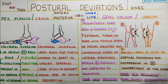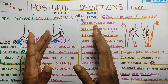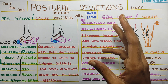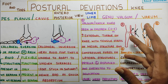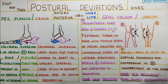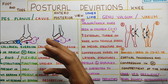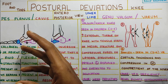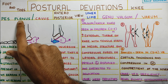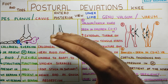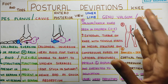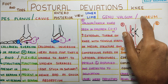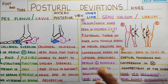In this video, we are going to talk about postural deviations in the antero-posterior view for the lower limb. We will cover the ankle joint and then the knee joint. Under the ankle joint, we will see what is pes planus and pes cavus — also known as the flat foot and the high arched foot. And then at the knee, we will see what is genu valgum and varum.